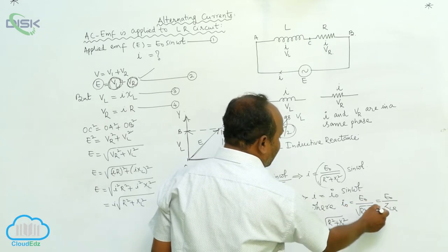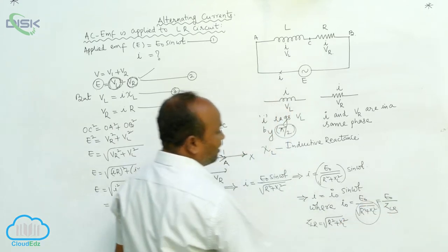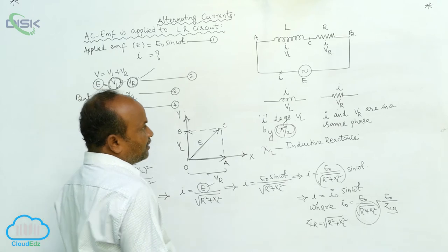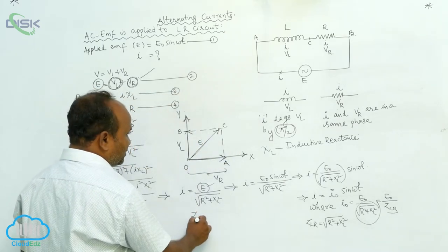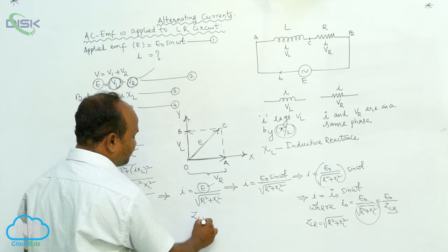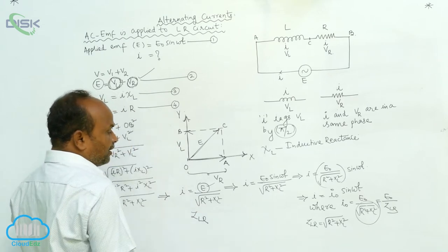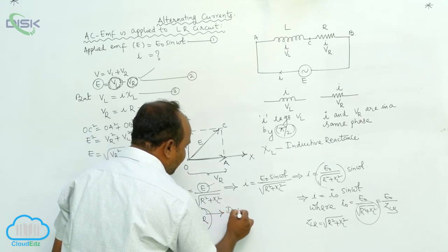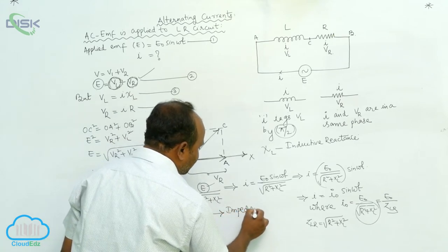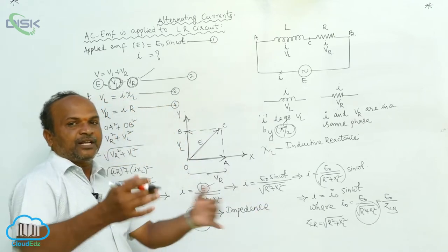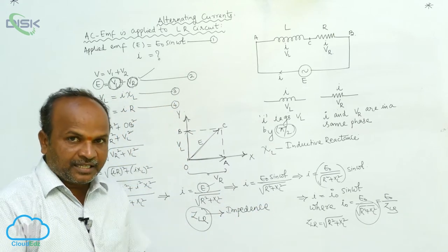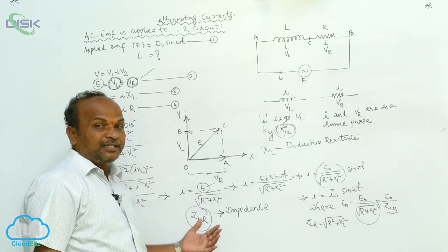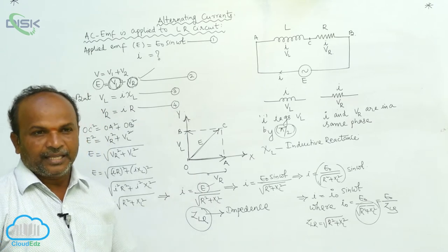This term is represented by Z_LR. There is a need to introduce Z_LR, which is called impedance. Impedance is the resistance offered by the whole LR circuit. Resistance, reactance, and impedance are all current-opposing properties.